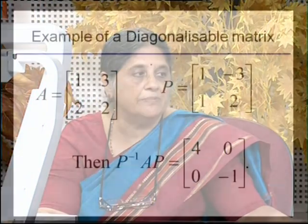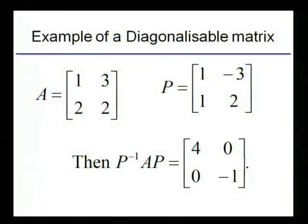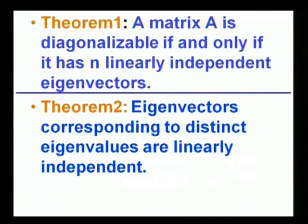Here is an example of a diagonalizable matrix. If A is the matrix [1, 3; 2, 2] and P is [1, −3; 1, 2], we find that P⁻¹AP is a diagonal matrix.